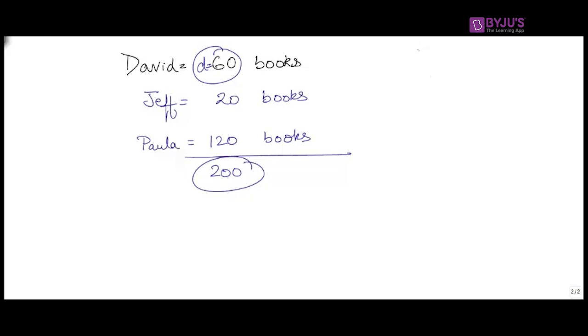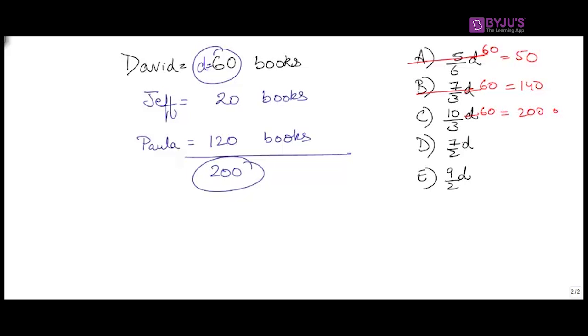Let's look at the answer options. Taking D as 60, we get 50 in option A, which is too small. Option B gives 140, goes out. Option C gives 200, keep it. Option D gives 210, which is too much. Option E gives 270, way more than what we're looking for. You're left with C, that's your answer.